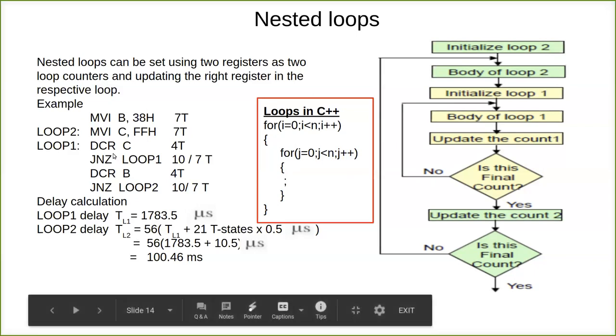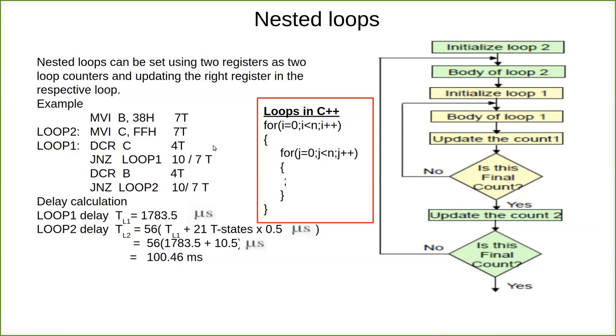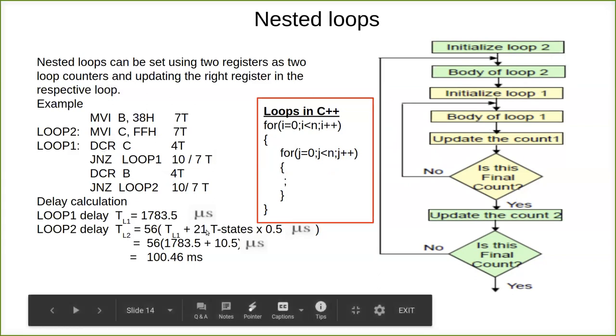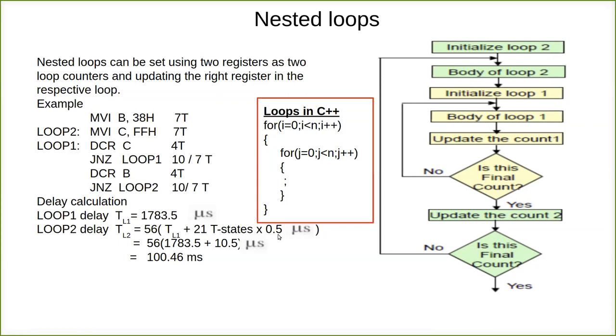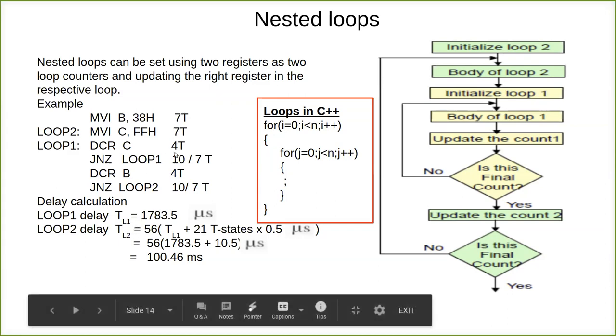Then loop 2 delay. Here 56, it is TL for loop 1, time delay of loop 1 plus 21 T states. How did this 21 occur? If you see, this is 10 and this is 4, so 14 plus 7 equals 21. This we have already calculated here. 7 plus 4 which is nothing but 21 T states, plus the T states multiplied by the clock period. Now what is this 56? 56 is what you get when you add all these things.